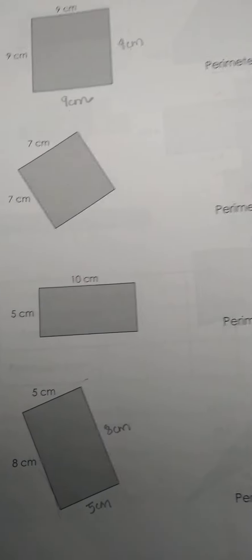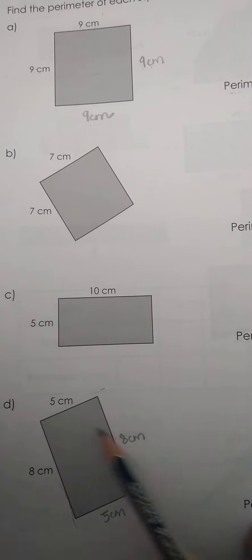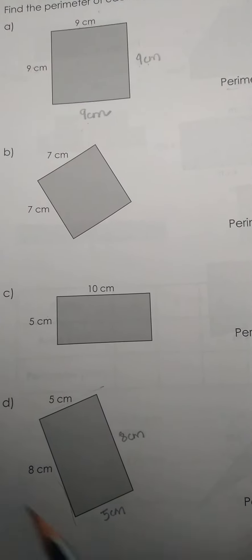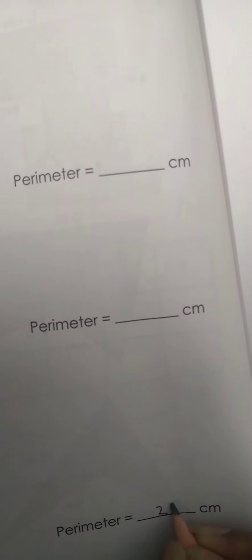Now to find the perimeter, add all the sides. 8 plus 5 will give you 13, 13 plus 8 and 5 will give you 26 centimeters.